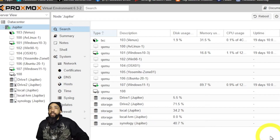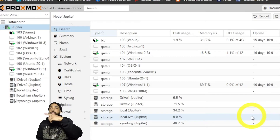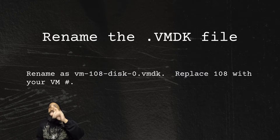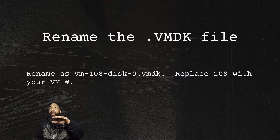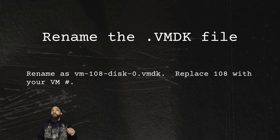After clicking Finish, machine 108 appears with a question mark while it's being created. Once the machine is created, we need to rename the VMDK file to the Proxmox naming convention: vm-108-disk-0.vmdk — replace 108 with your own VM number.